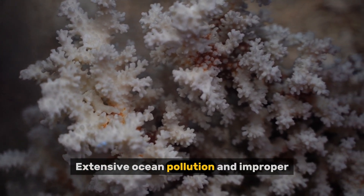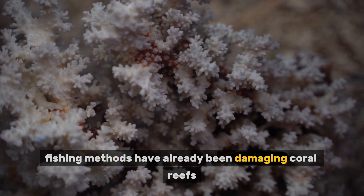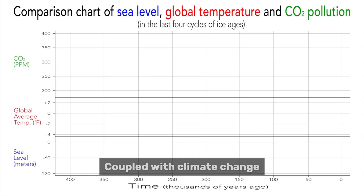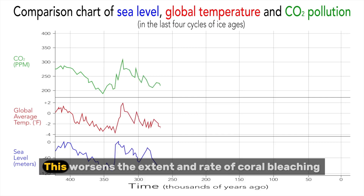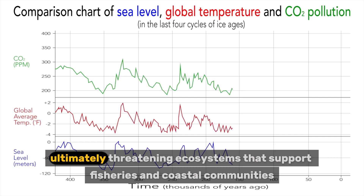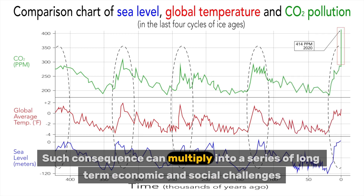Extensive ocean pollution and improper fishing methods have already been damaging coral reefs. Coupled with climate change, the rise of global sea temperatures and ocean acidification will occur. This worsens the extent and rate of coral bleaching, ultimately threatening ecosystems that support fisheries and coastal communities. Such consequences can multiply into a series of long-term economic and social challenges.